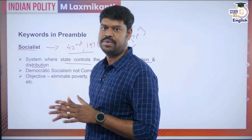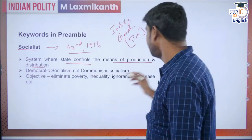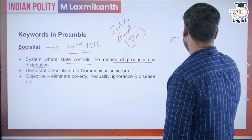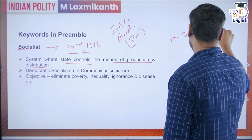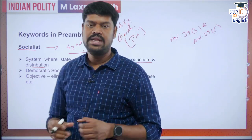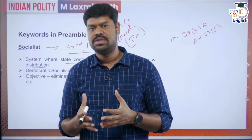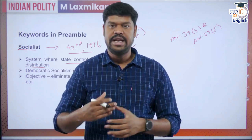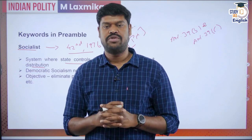There are a number of provisions in the Directive Principles of State Policy which are socialistic in nature. For example, Articles 39(b) and 39(c) of the constitution deal with the redistribution of wealth in the society and the prevention of concentration of wealth. This is exactly a socialistic idea — the state can take measures to redistribute wealth and prevent concentration of wealth.